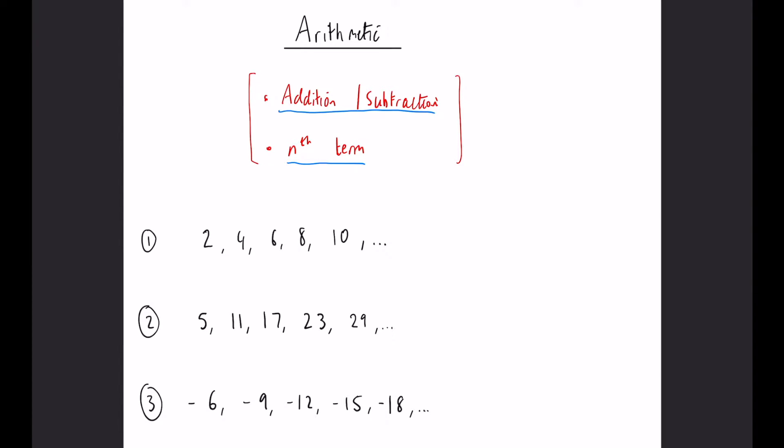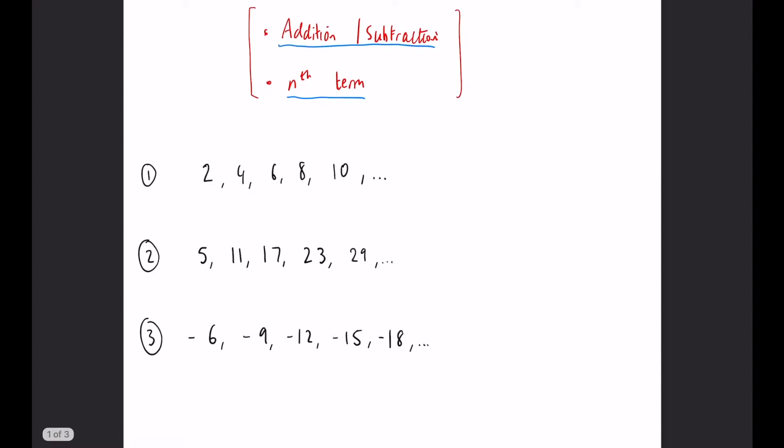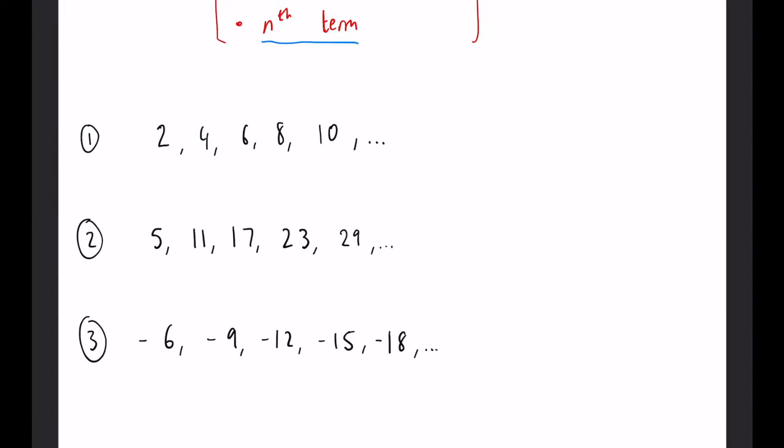Let's have a look at some examples. Here you can see that between each term we're adding 2, so that distinguishes it's an arithmetic sequence and we could find an nth term for it. The nth term for this would be 2n. Because that is exactly the same as the 2 times table, there is no plus or minus. If you don't understand where this came from, watch my nth term videos and you will understand that.